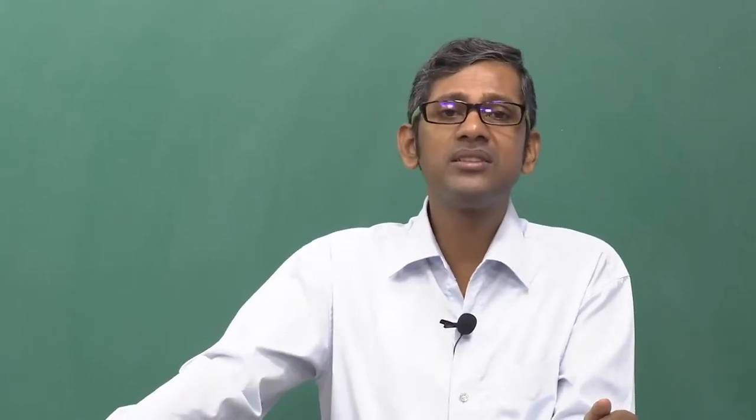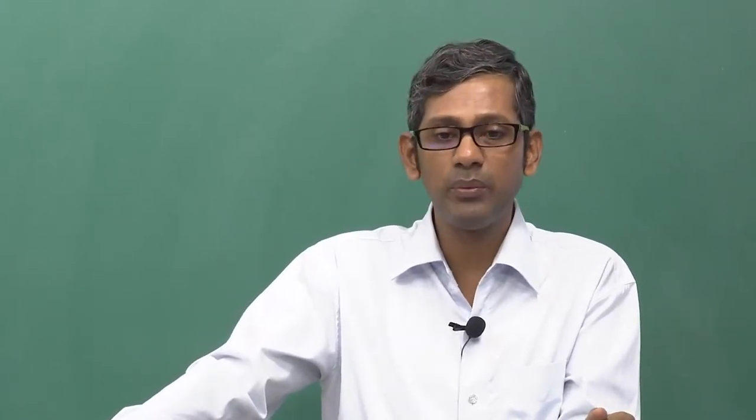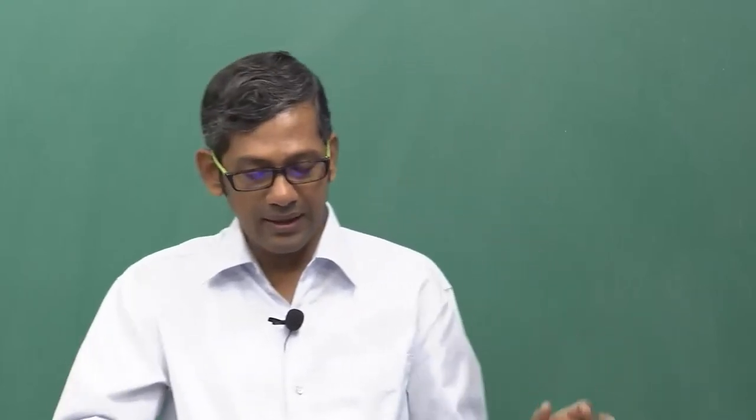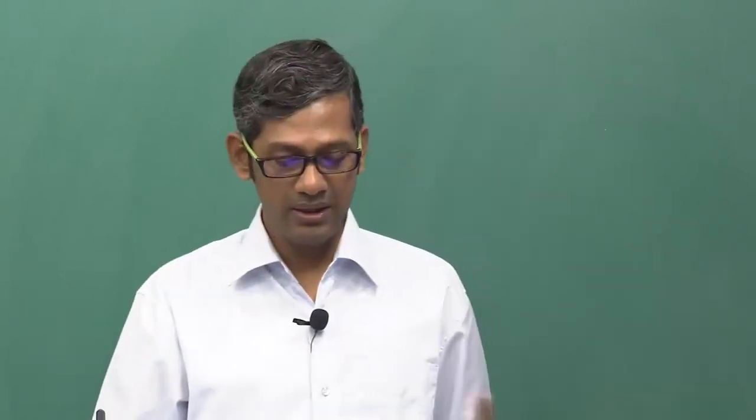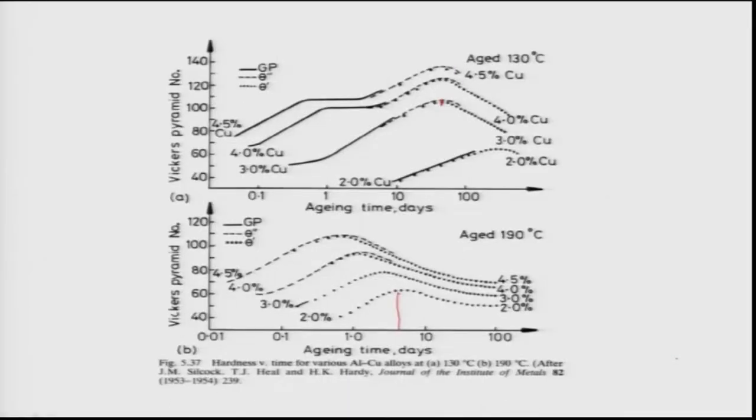Theta, the equilibrium precipitate, is completely incoherent, so dislocations only form loops around it. Theta precipitates grow larger with time or temperature. Because of their coarser size and greater spacing, the material loses strength gradually, explaining why hardness drops off at long aging times.